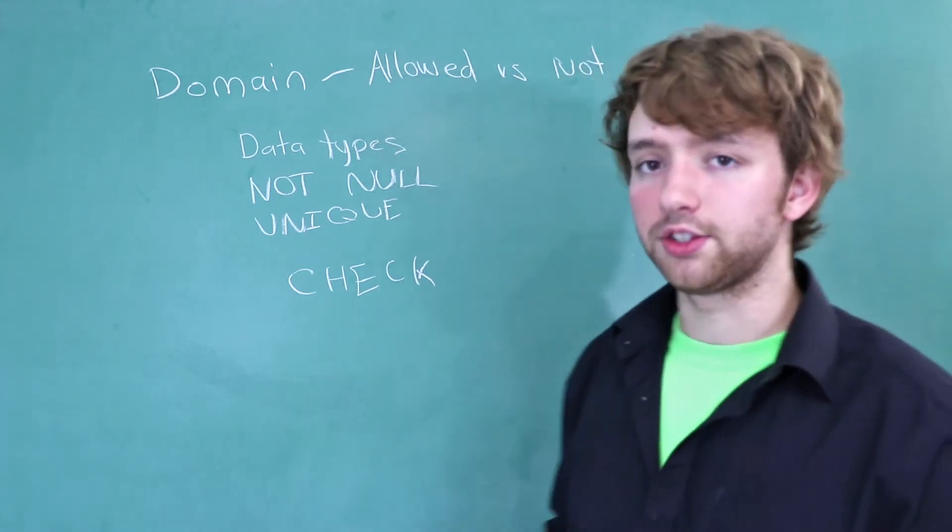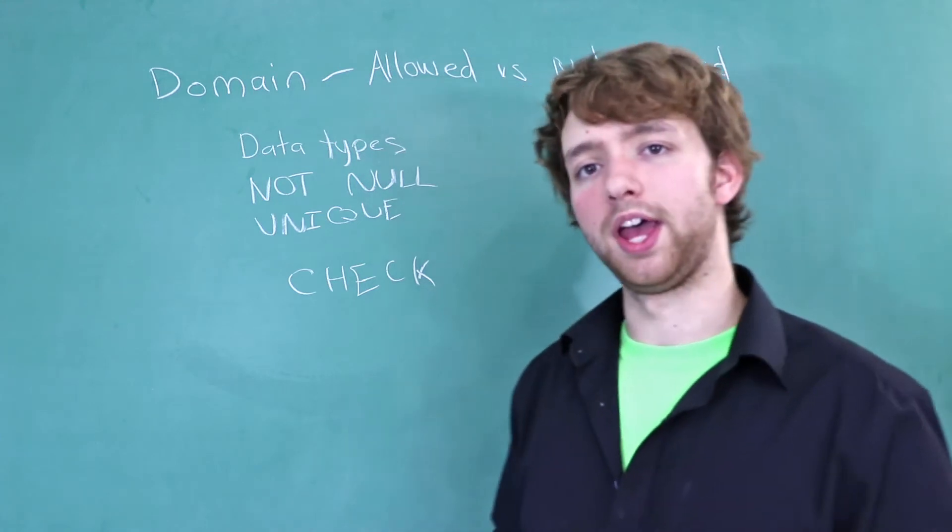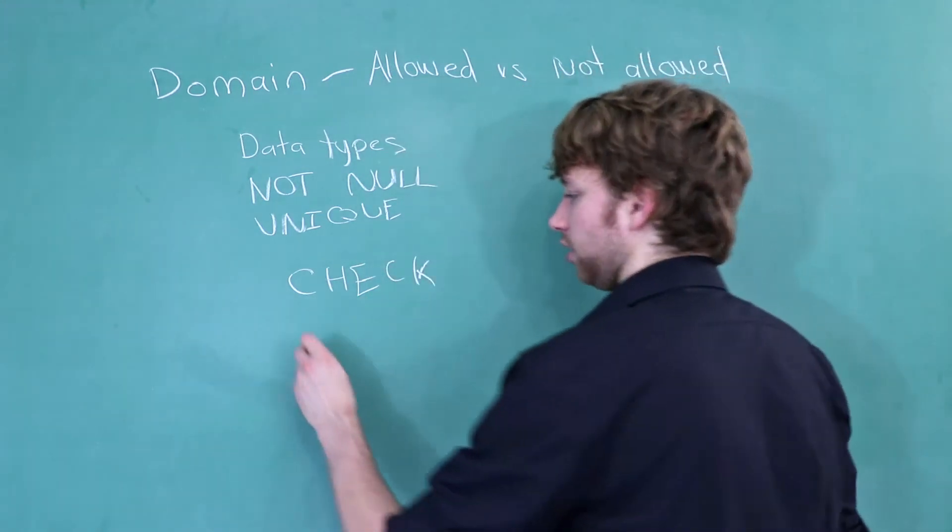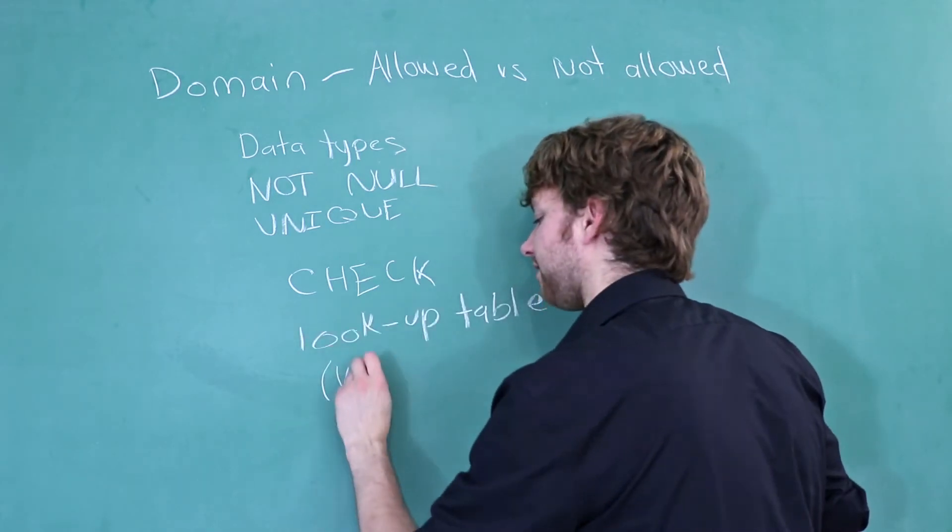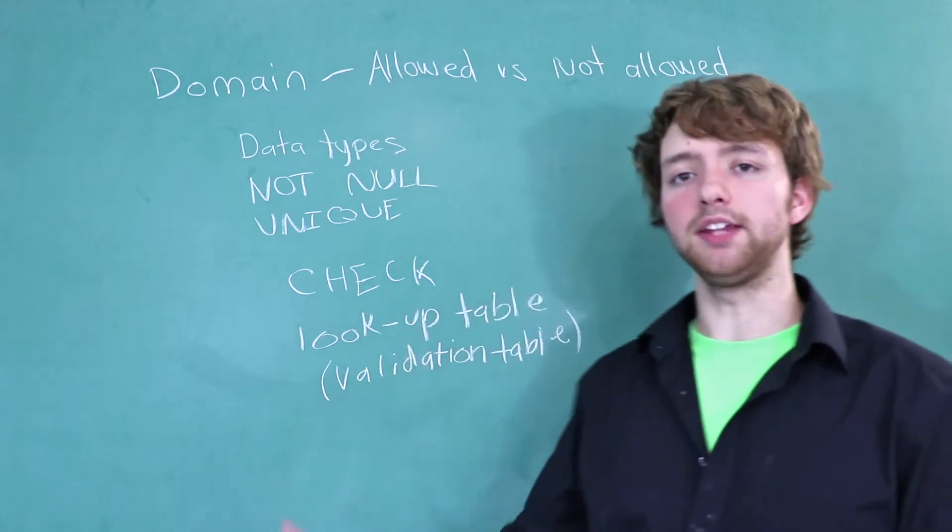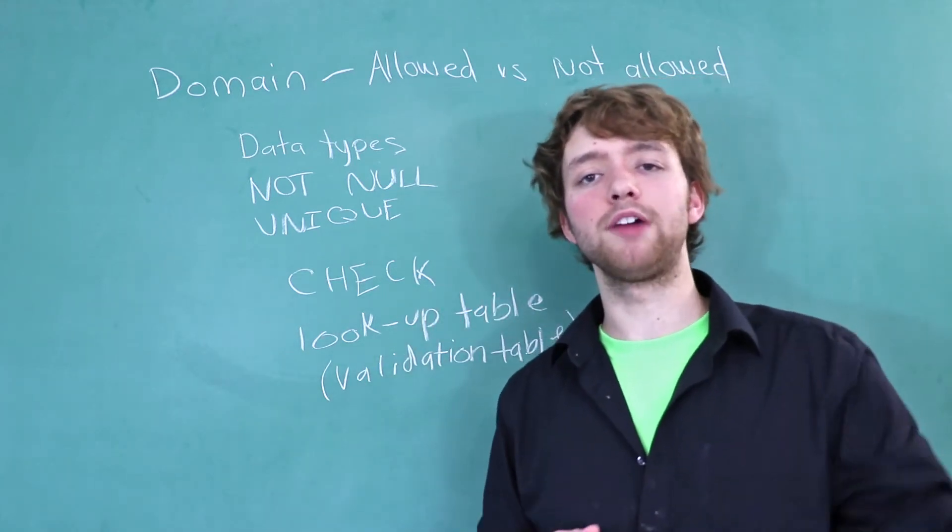Now if you are not using check constraints, there is kind of like an old-fashioned way of doing something similar to a check constraint. And that's generally called a lookup table, also known as a validation table. A classic example of this is having the states in a table and then referencing them.